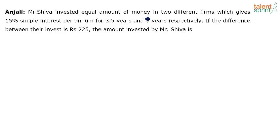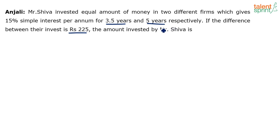Mr. Shiva invested equal amounts of money in two different firms, both giving 15% simple interest per annum — the first for 3.5 years and the second for 5 years. If the difference between the interest earned is rupees 225, find the amount invested by Mr. Shiva.